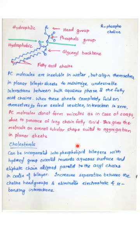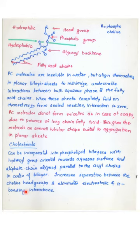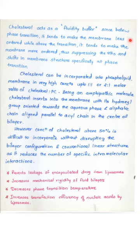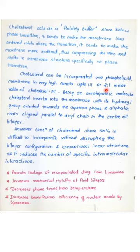The other important component of liposomes is cholesterol, which is incorporated into the phospholipid bilayers with the hydroxyl group oriented outwards towards the aqueous phase and inwards towards the aqueous core, and the aliphatic chains are aligned parallel to the acyl chain. This cholesterol helps to increase the separation between the phosphatidylcholine head groups and eliminate electrostatic and hydrogen bonding interactions, thus stabilizing the liposomal structure. Cholesterol acts as a fluidity buffer: below the phase transition point it tends to make the membrane less ordered, and above the transition point it helps make the membrane more ordered, suppressing tilts and shifts at the phase transition temperature. Cholesterol can be incorporated into the phospholipid membrane in very high concentrations as high as 1:1 or 2:1 molar ratio.